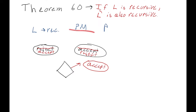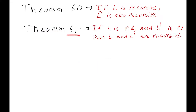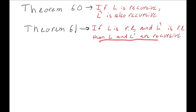Now we have a post machine that accepts L complement, accepting all the words in L prime, rejecting all the words in L, and looping forever on nothing because the original machine looped forever on nothing. Now let's talk about Theorem 61: if L is recursively enumerable and L prime is recursively enumerable, then L and L prime are both recursive. This follows from Theorem 60 — if L is recursive then L prime must be recursive as well.